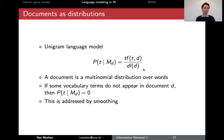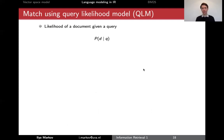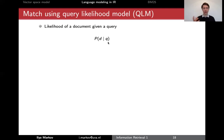The first and most commonly used technique is called the query likelihood model, QLM for short. The QLM starts with the probability of a document given a query, because we want to rank documents given a query. We have a query like 'University of Amsterdam' and we want to find the documents that are most likely given this query.